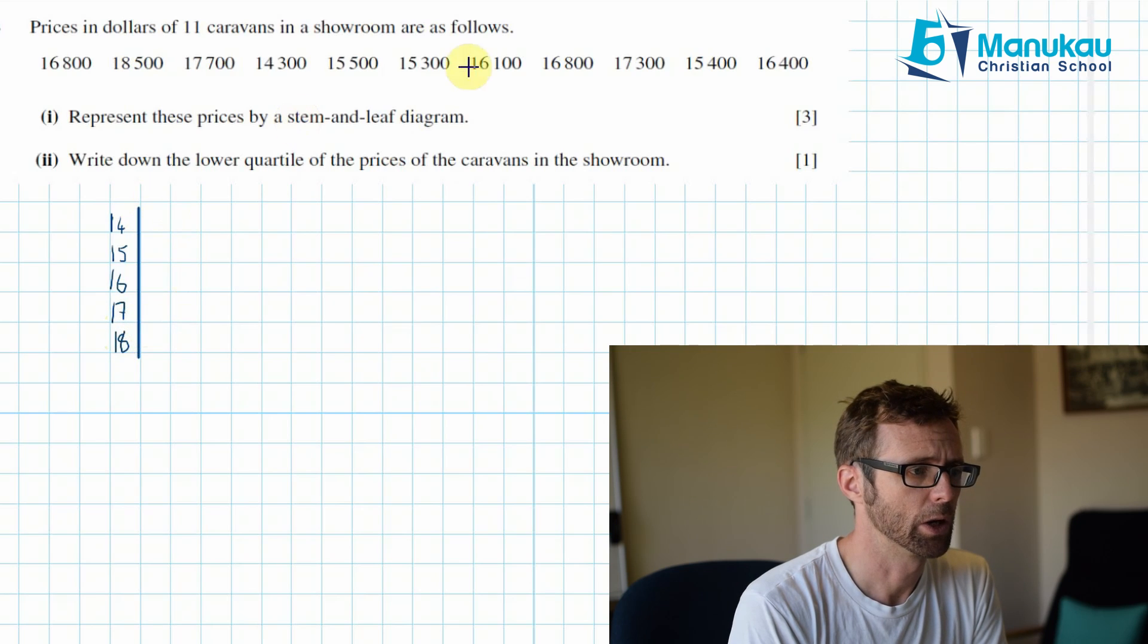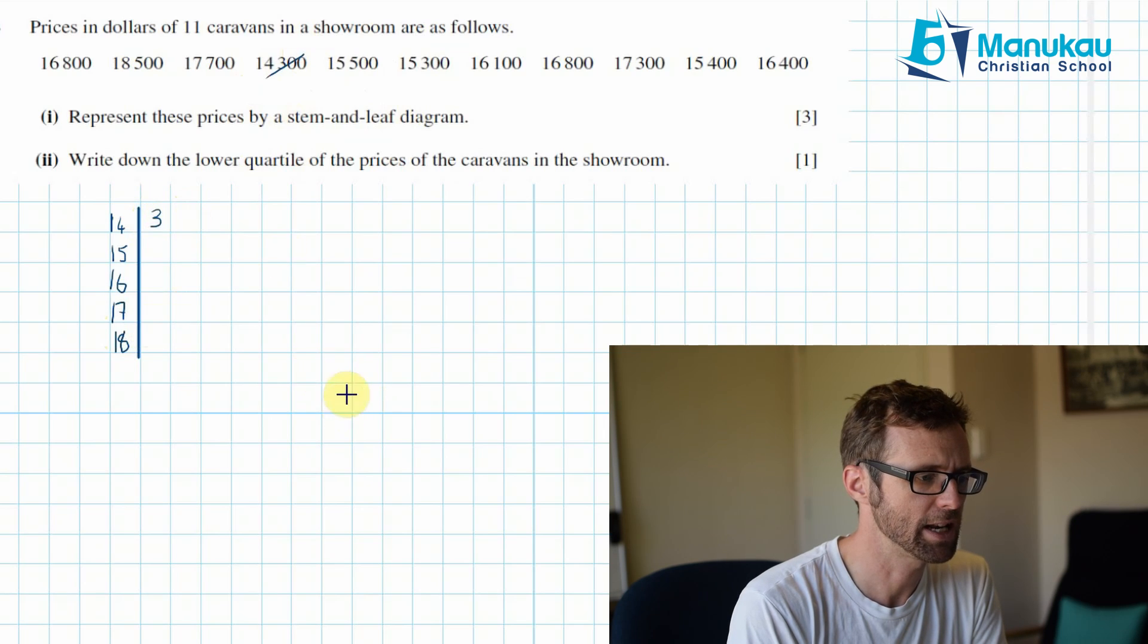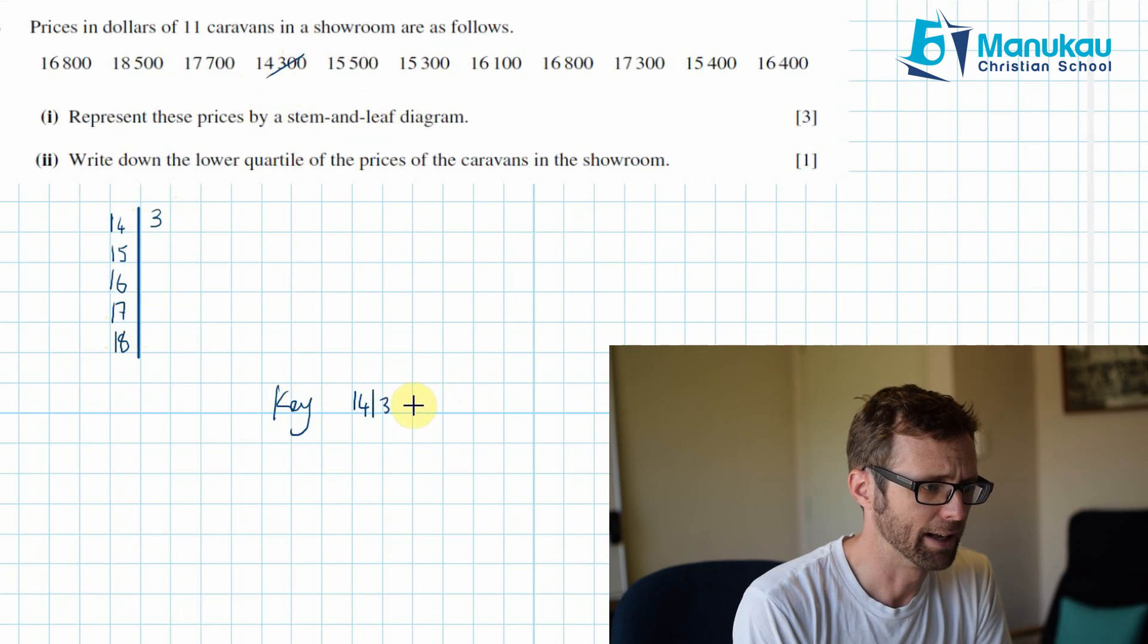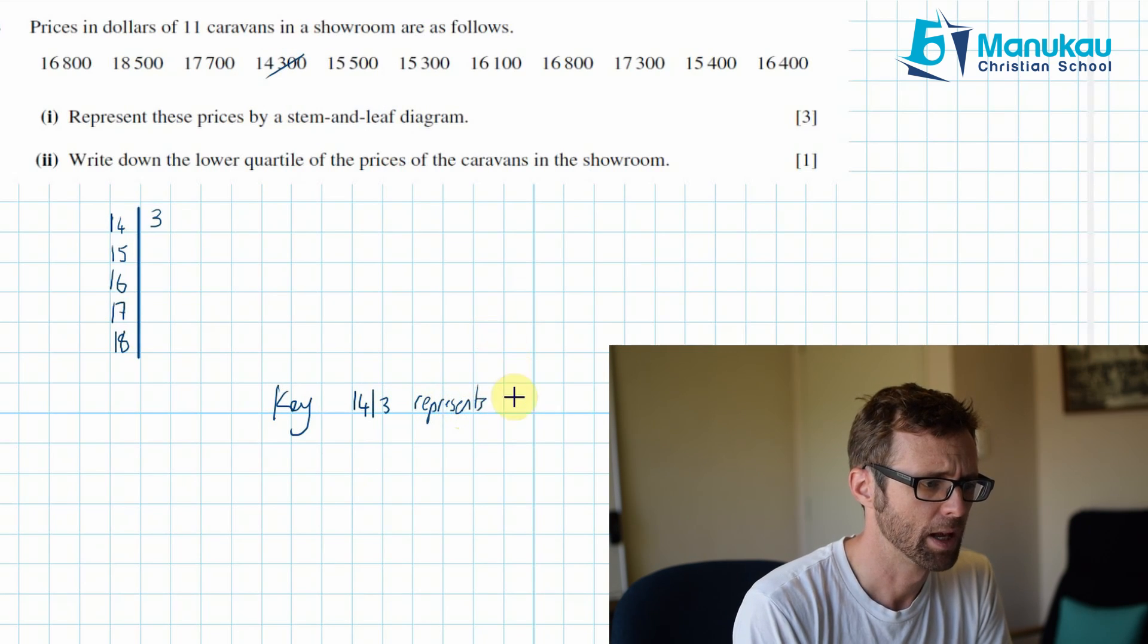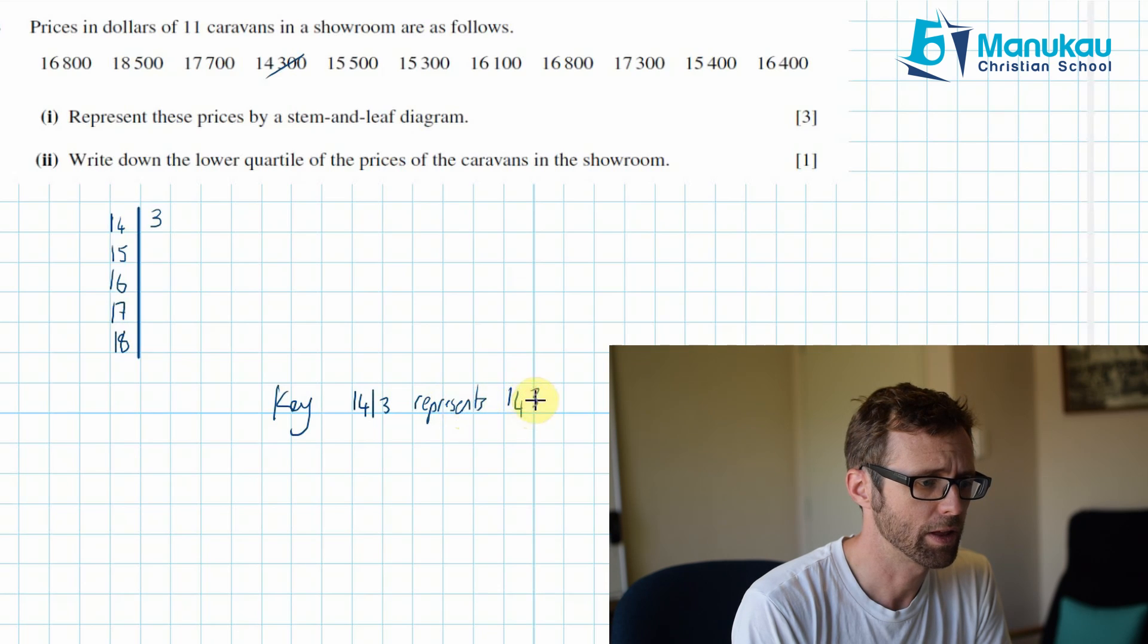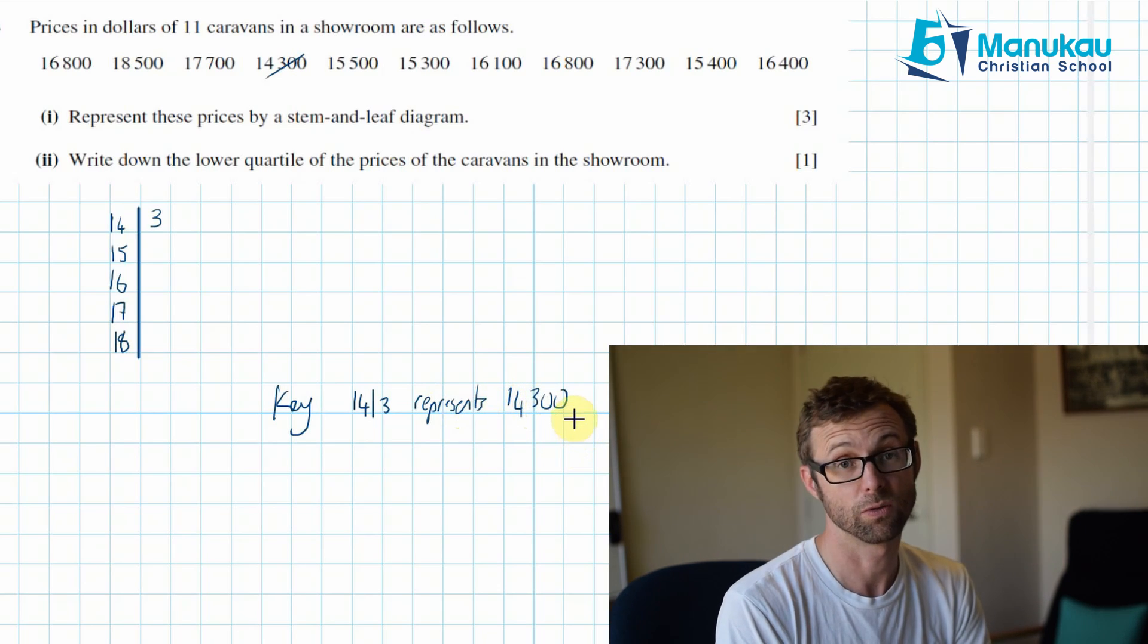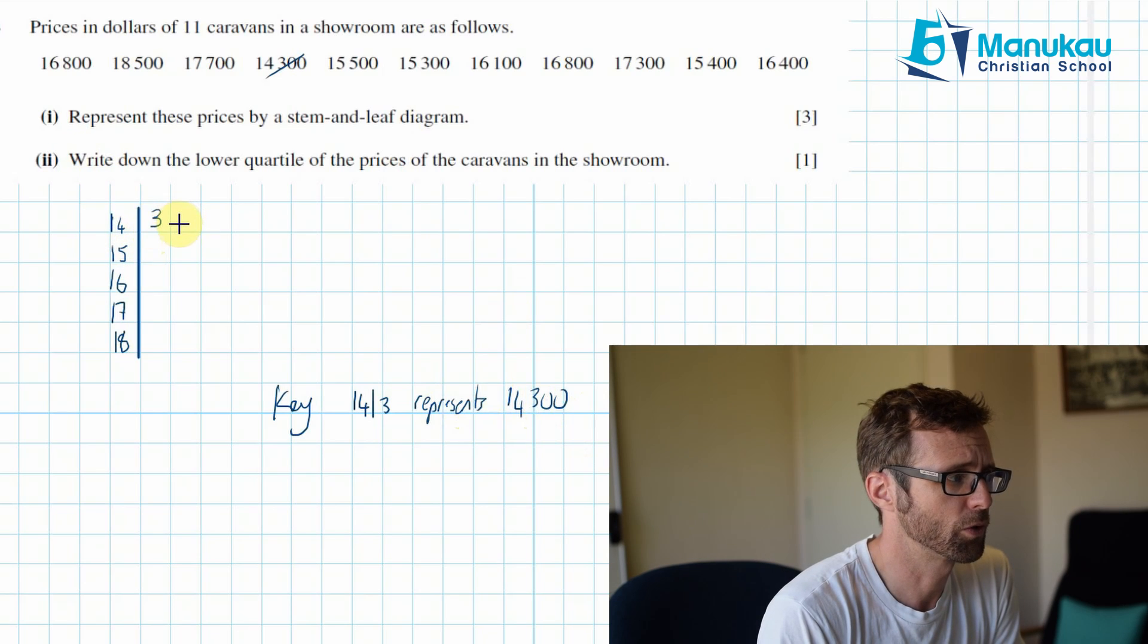And then we're just going to go in and pop our numbers in. Okay, so last one here, this one. So I'm going to, I'll put a little key down here. So key, excuse the dodgy writing. So I'll say 14, 3. Maybe we say represents or equals. And this will be, hmm, say 14,300. So make sure you've got a key in there. Okay, and let's just work through these.